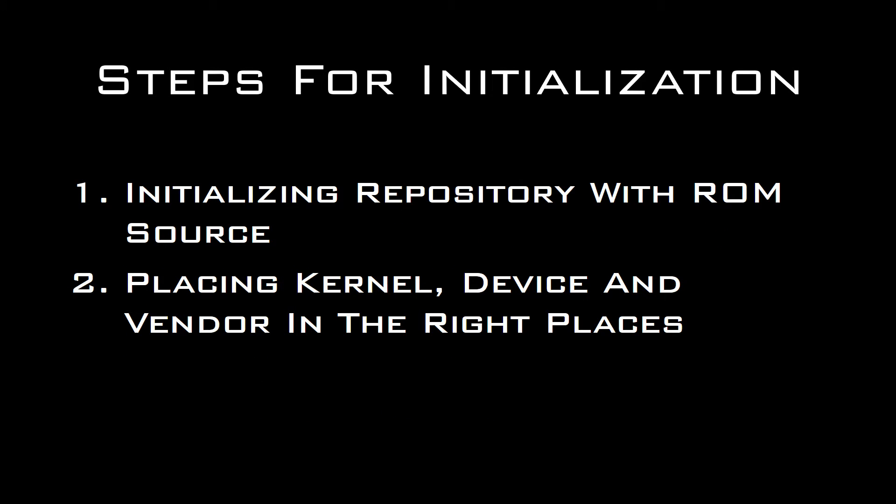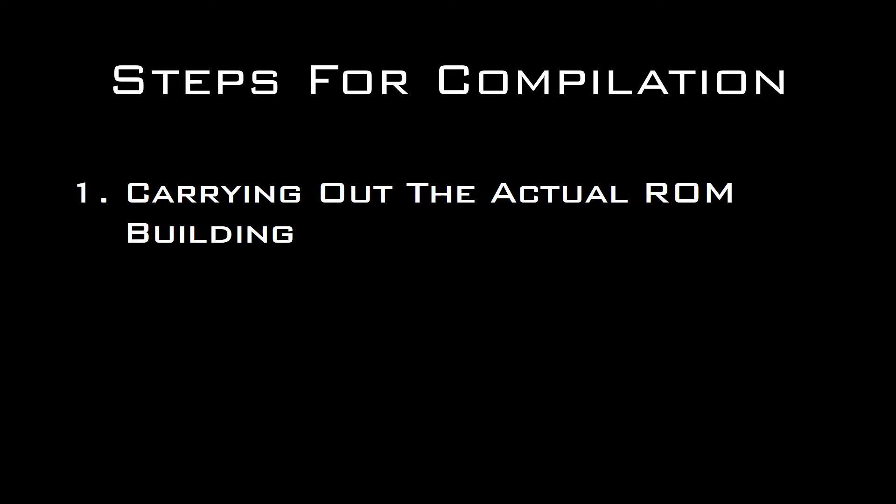Now let's take a look at the steps for initialization. First, we'll initialize the repository for the ROM source and download all the sources — the ROM source, the kernel source, the device tree, and the vendor source. After syncing and downloading everything, we'll place them in the right directories so that the makefile is able to find all of them. Finally, we'll start the compilation, which will take time depending on the processor and RAM you have.